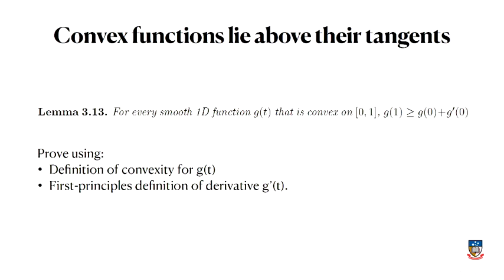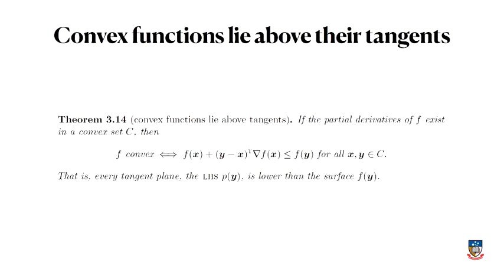So we're going to use that result as part of the proof of the thing that we actually want to prove, an important theorem that says convex functions lie above tangents. The theorem says, assuming that the partial derivatives of f exist in some convex set c, then I have an if and only if statement. So f is a convex function if and only if f of x plus y minus x times the gradient of x is less than or equal to f of y.